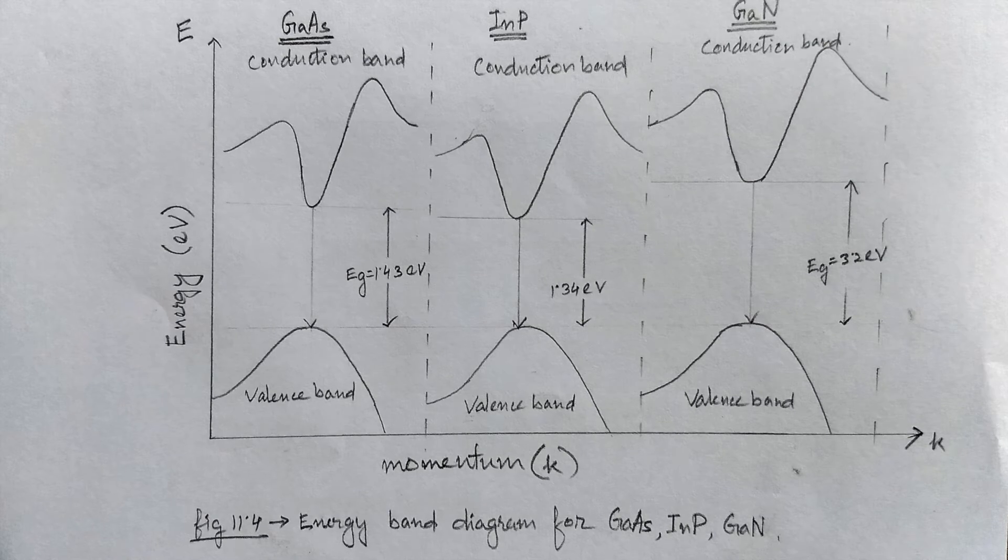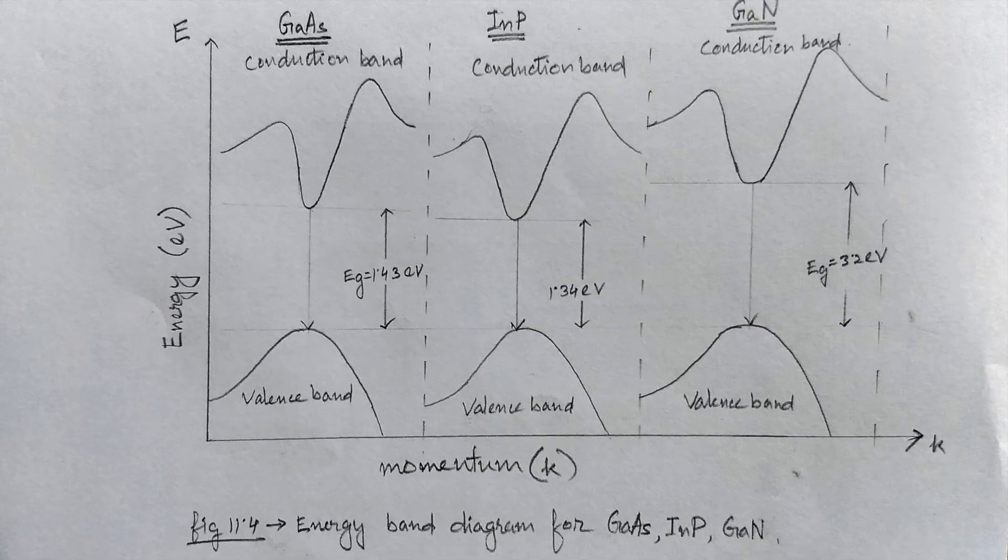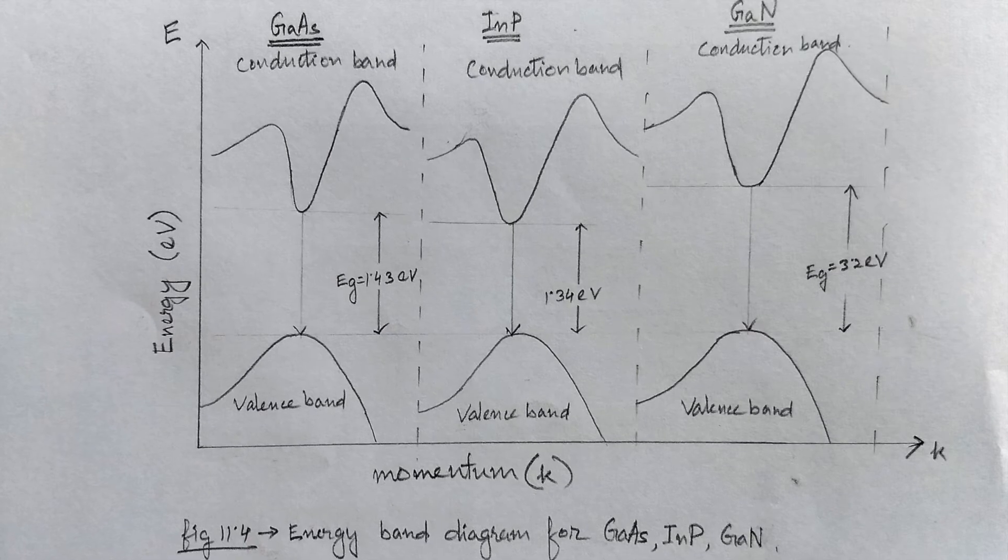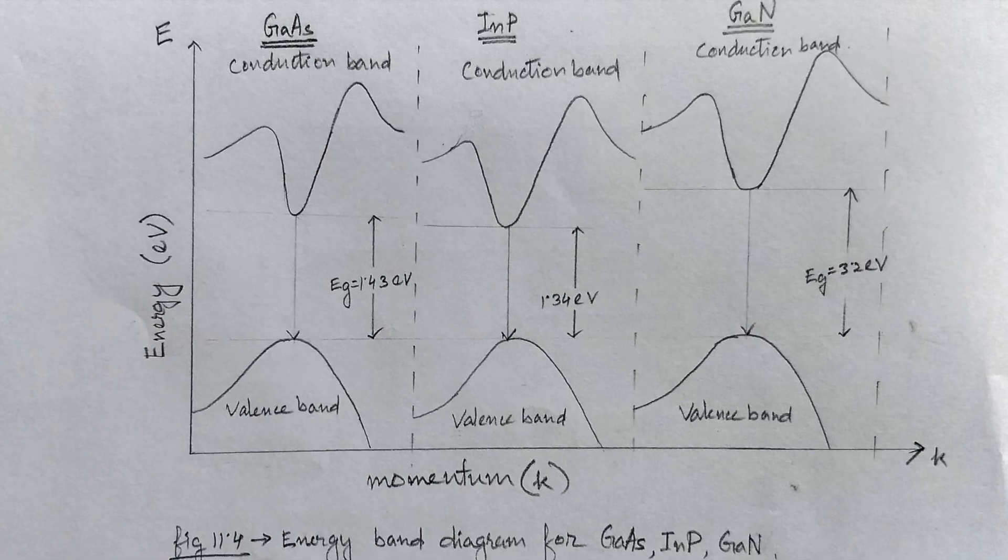The compounds like gallium arsenide, gallium phosphide, and indium phosphide are classified by the valence bands their constituents occupy.